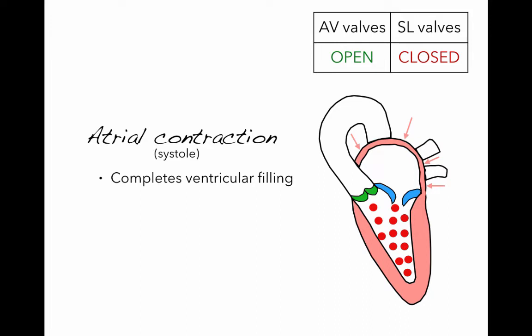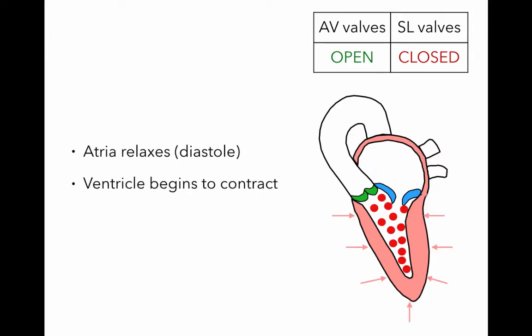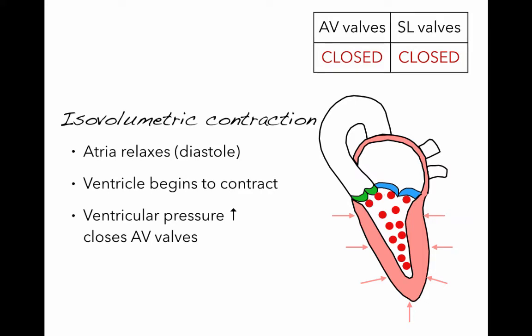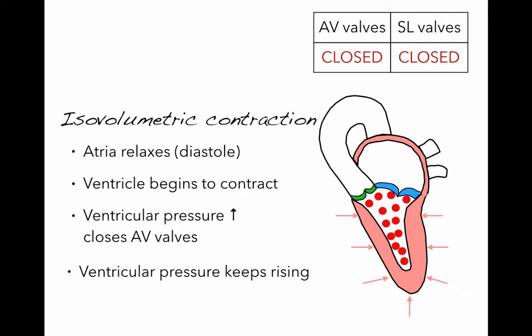As we enter the next phase, the atria will relax — they'll be in diastole — and the ventricle will begin to contract. This will push blood up against the atrial ventricular valve cusps, closing them. As the ventricle continues to contract with all valves closed — that is, the atrial ventricular valves and the semilunar valves — we enter the next phase called iso-volumetric contraction. The blood volume in the ventricle remains the same as pressure rises due to the ventricles contracting, but no blood is leaving the heart. Therefore, we call it iso-volumetric.